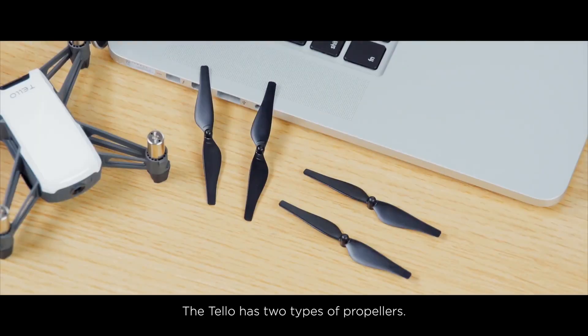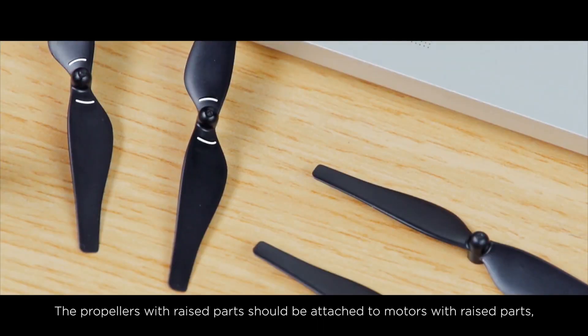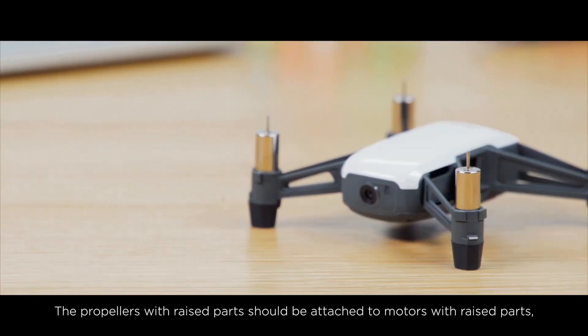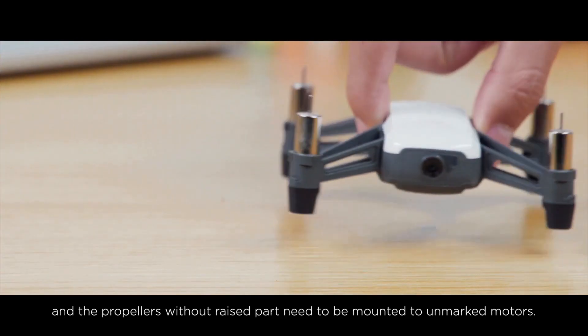The Tello has two types of propellers. The propellers with raised parts should be attached to motors with raised parts, and the propellers without raised part need to be mounted to unmarked motors.